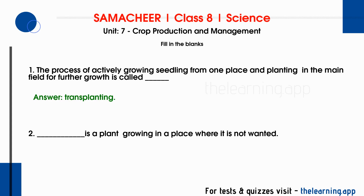Second question: a plant growing in a place where it is not wanted is called — weed. A weed is a plant that grows in a place where it is not wanted.